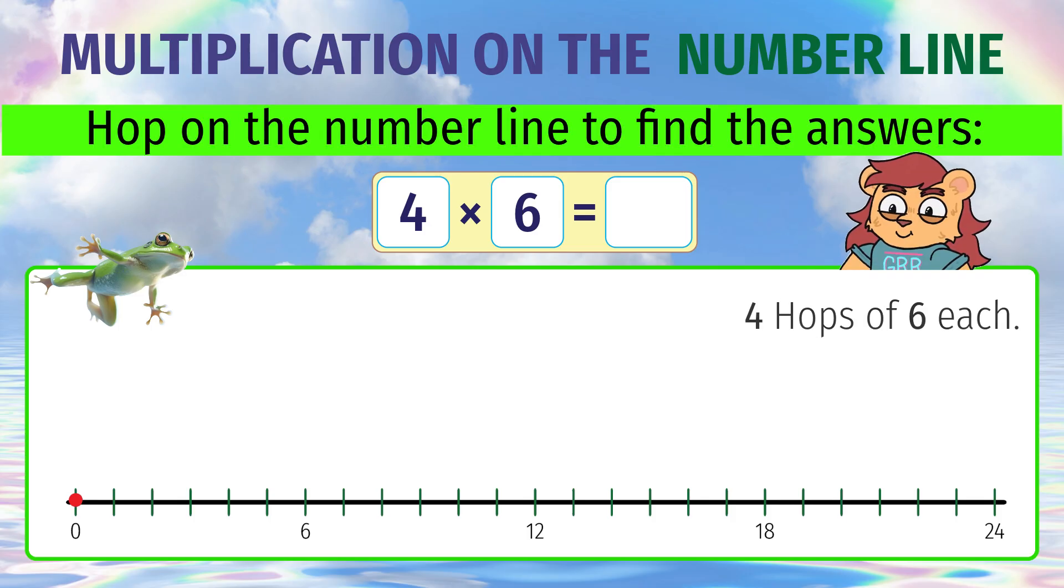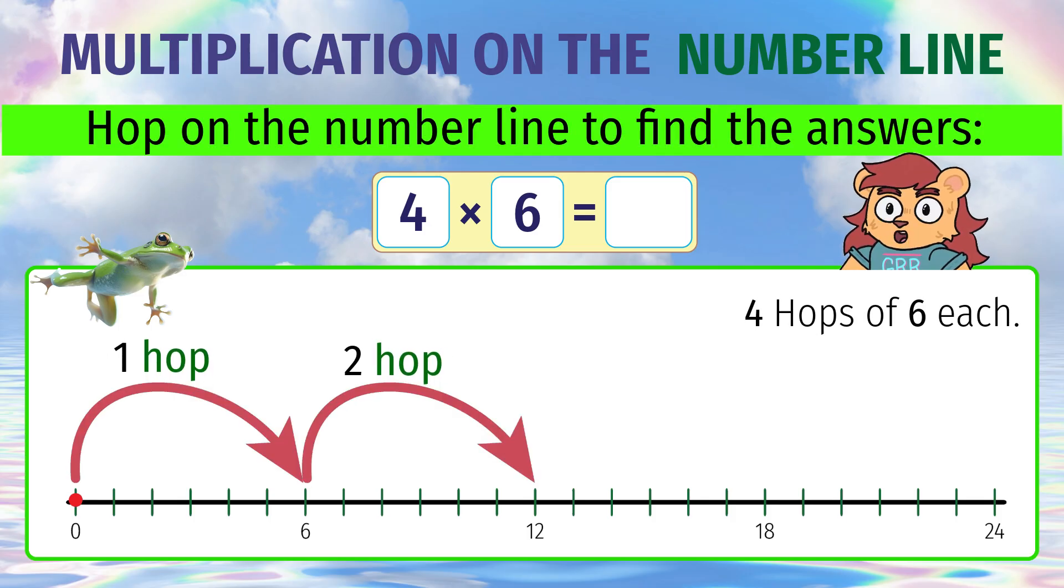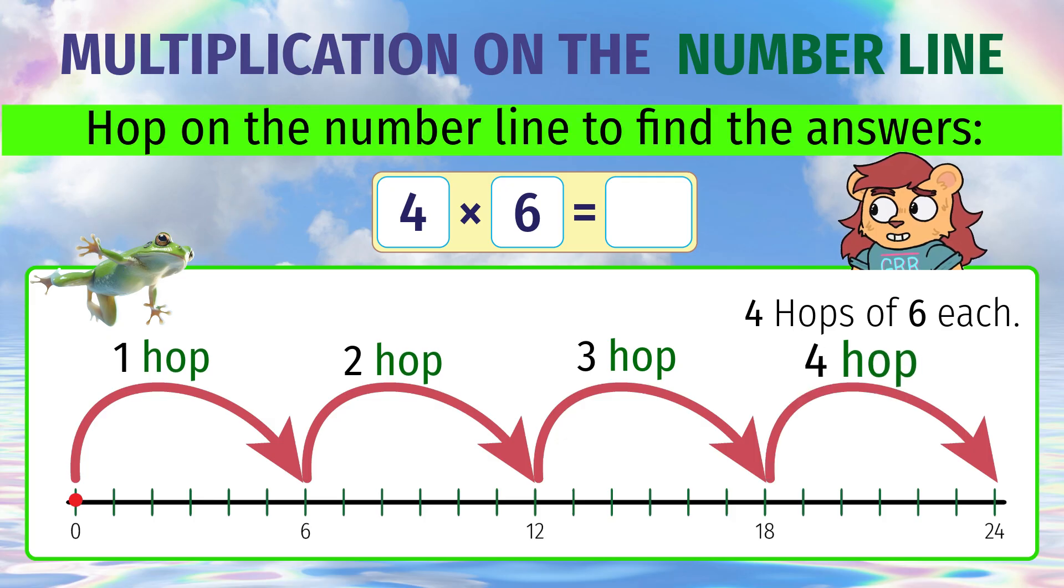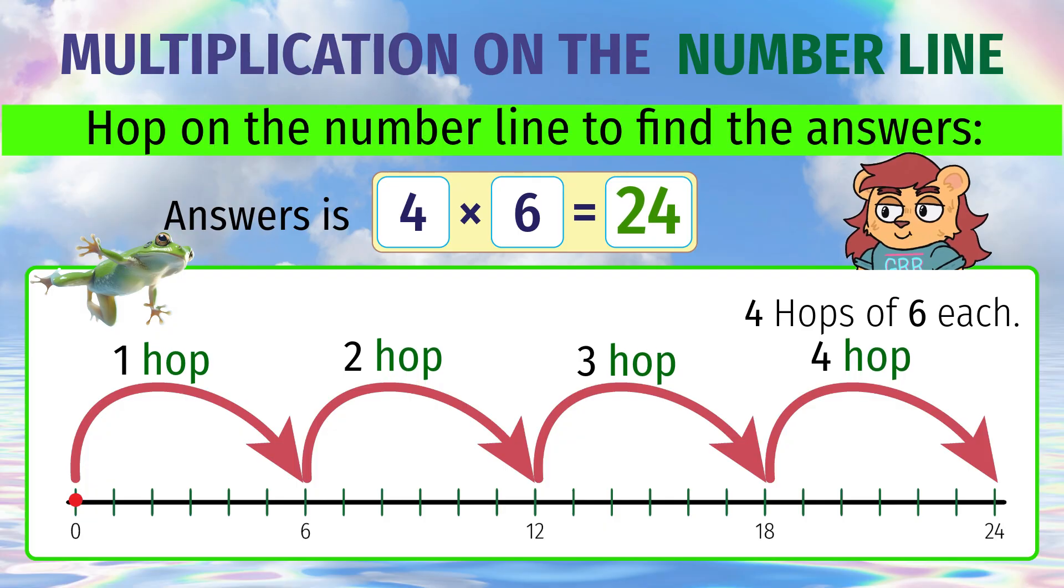4 into 6 means 4 hops of 6. We hop 4 times, each time by 6, starting at 0. We end up at 24. So, 4 into 6 equals 24.